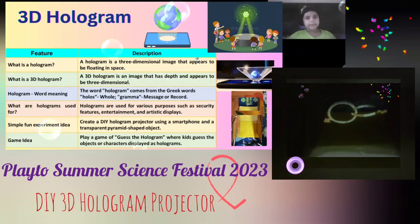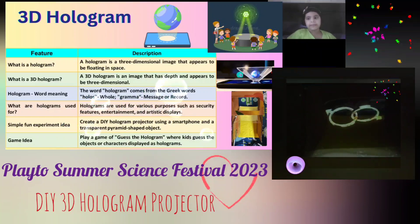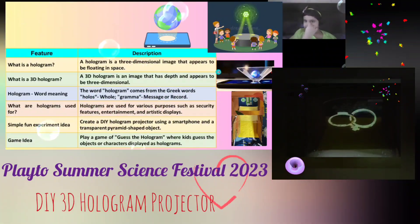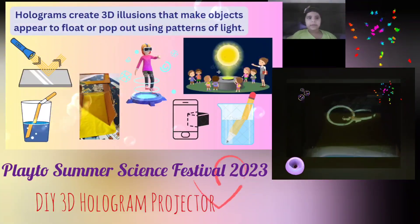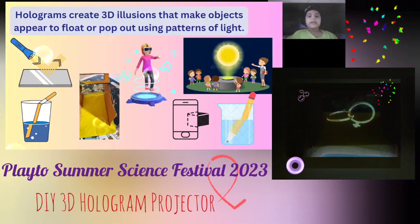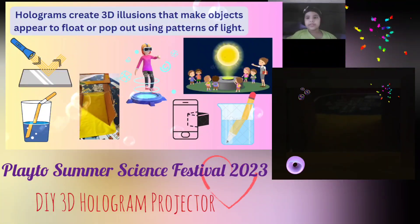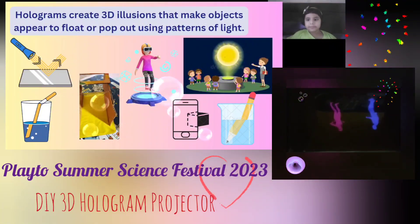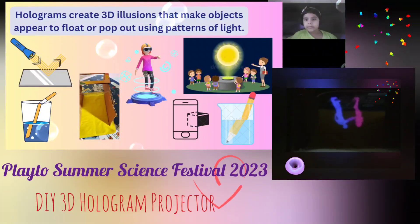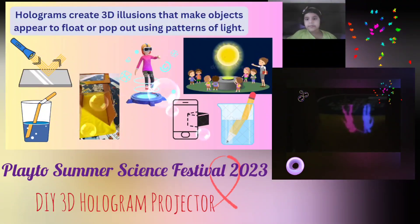What is the working principle of a hologram? Let's find out. Holograms are things that create 3D illusions that make objects appear to float or pop out using patterns of light.